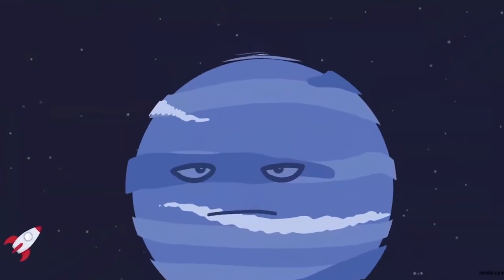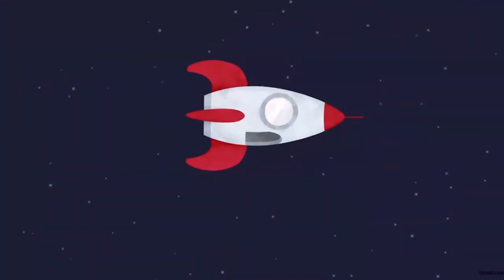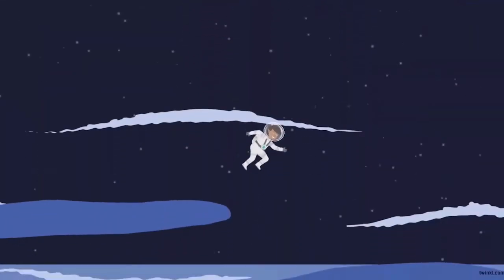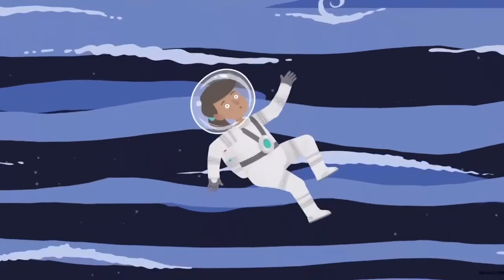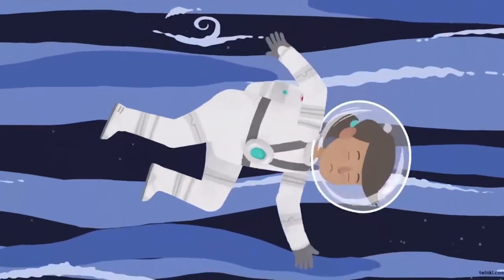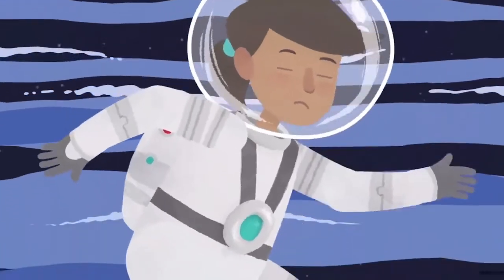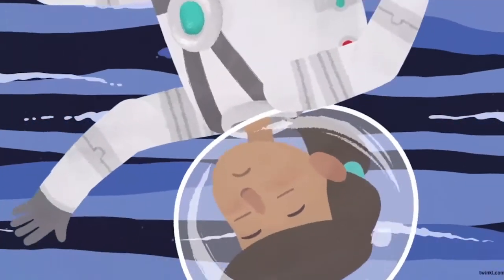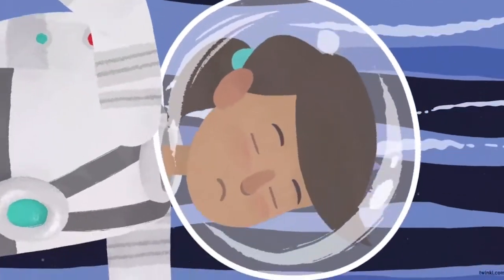I'm a sphere of gases, coloured bright blue. Don't try to land on me or you'll fall right through. Dark and cold a long way from the sun. Wild swirling winds don't make me much fun. Freezing temperatures can't sustain life here. I'll drag you down with my crushing atmosphere.